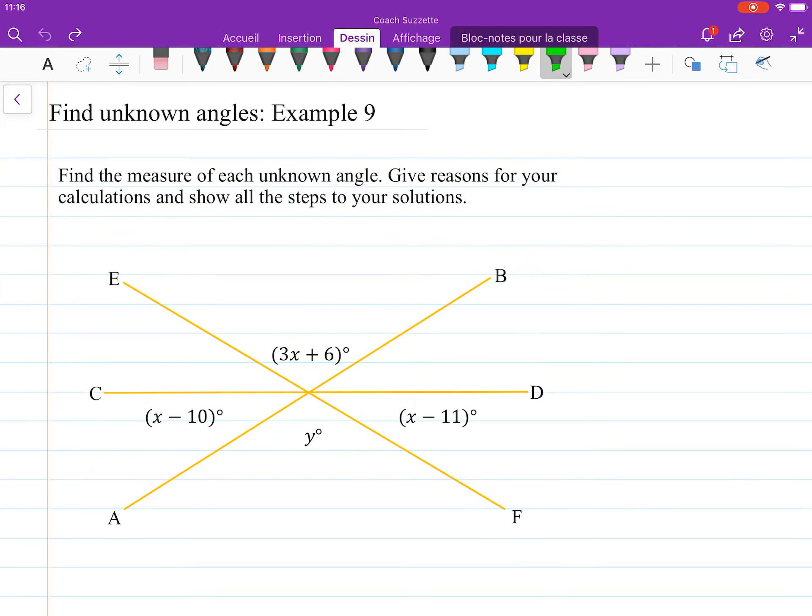OK. Well, we can see that angles at a point sum to 360. We can see angles on a line sum to 180. We have vertical angles. OK.